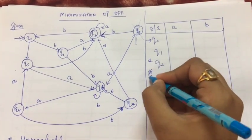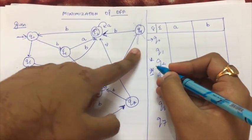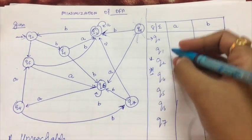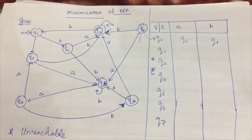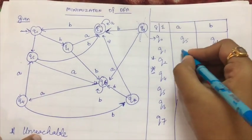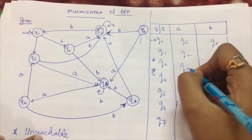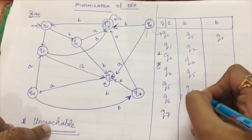We have not taken Q3 in this because it is an unreachable state and we need to minimize the DFA, so we have removed it. These are the transitions. I will write down very quickly for you - Q2, Q6, and Q6.